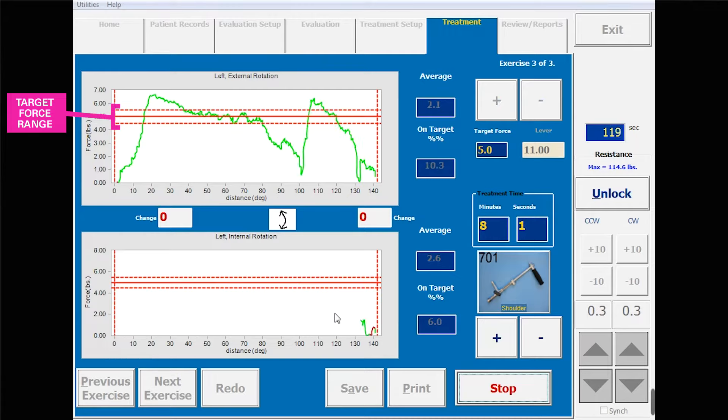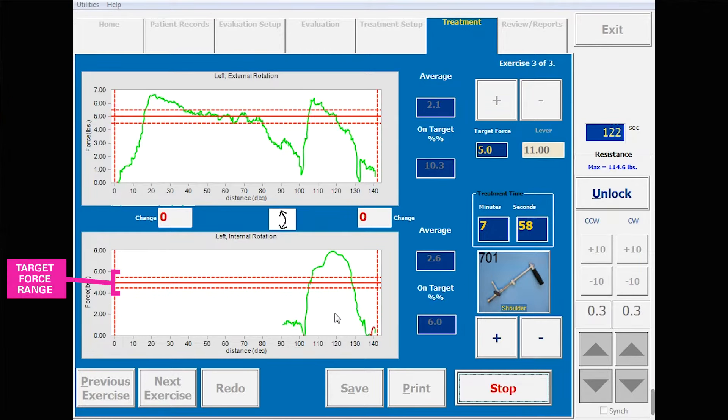While exercising, the client will either assist or resist the movement in order to meet the goal on screen. Just like with any exercise, you can set the target force on an individual basis. Most people use a percentage of isometric, limb weight, or the known task requirement.